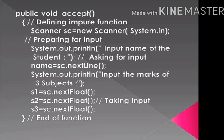Next slide contains the next part of the program. Public void accept() — start curly braces, defining impure function. An impure function is a function which does not return any value. Scanner sc equals to new Scanner(System.in) semicolon — Scanner class is defined inside java.util package, preparing for input. System.out.println("Input name of the student:") — asking for input. name equals to sc.nextLine() semicolon — taking input. nextLine method is defined inside Scanner class, used for taking input of a group of characters.